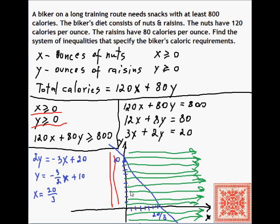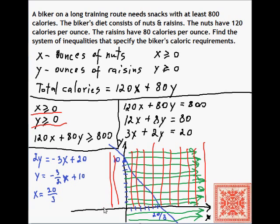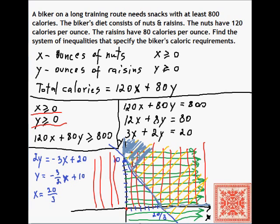Now let's graph y ≥ 0. Testing the origin, zero does not satisfy the caloric inequality, so the relevant half plane is on the other side of that line. The feasible set is the intersection of the three half planes — the red, yellow, and green regions — and this is the solution.